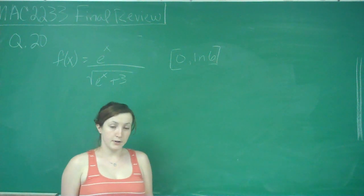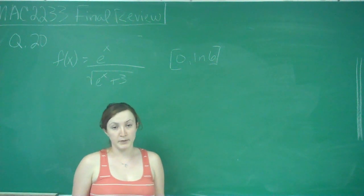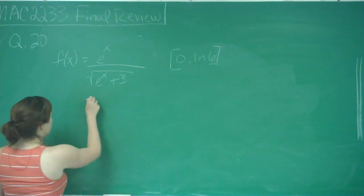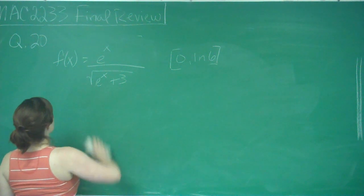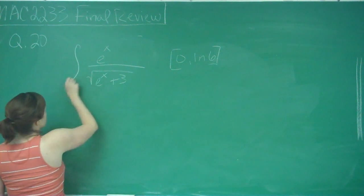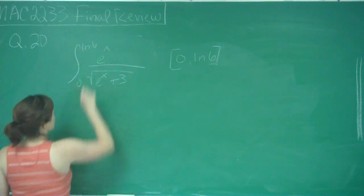So area under the curve or under the graph, you probably use integrals. So we're going to be taking, what this becomes now, what we're looking for is just the integral of this function from 0 to ln of 6.